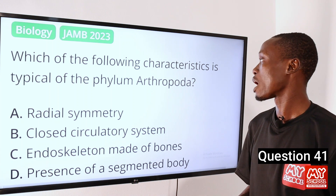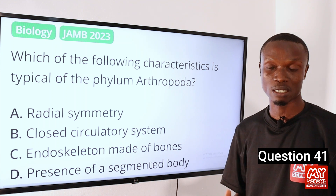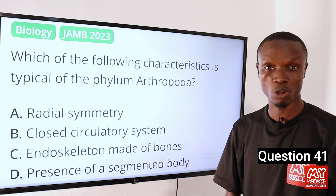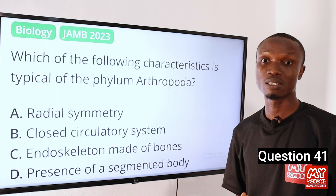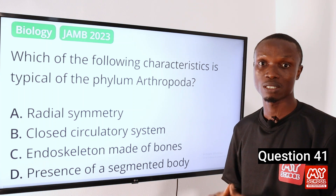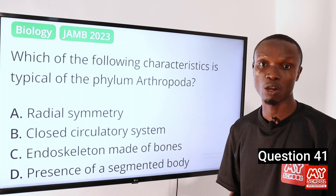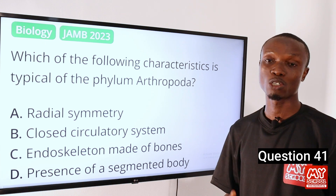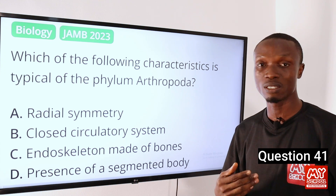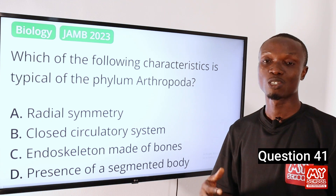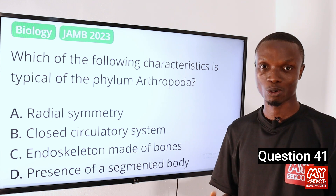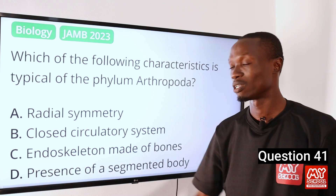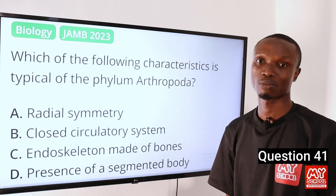The phylum Arthropoda is characterized by the presence of a segmented body, and this is the key characteristic of the phylum Arthropoda. Examples of arthropods include insects, spiders, and crustaceans. So that makes option D the correct option.